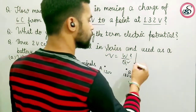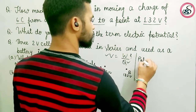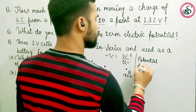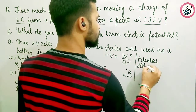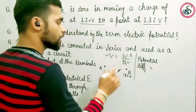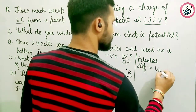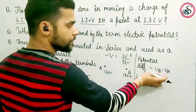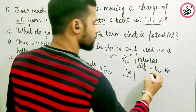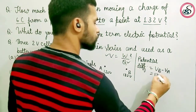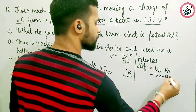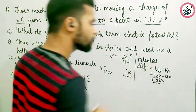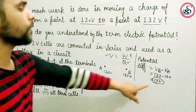If we calculate the potential difference — VB minus VA — that is the potential at point B and potential at point A. So that gives us 132 minus 120, which equals 12 volts. The potential difference is finally 12 volts.